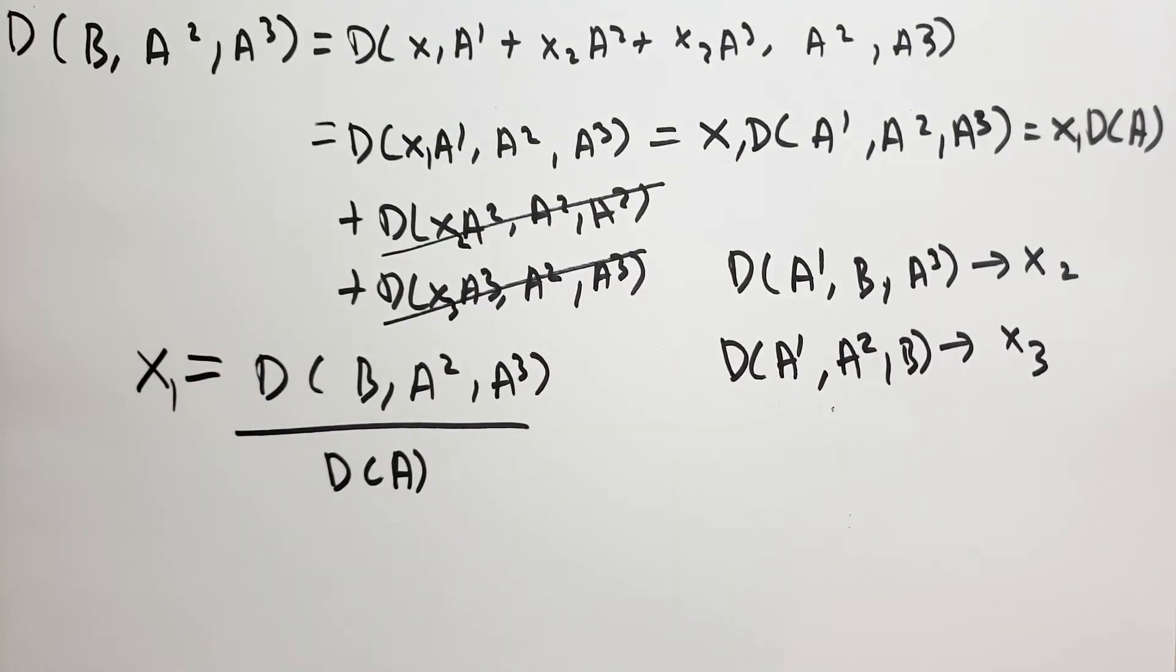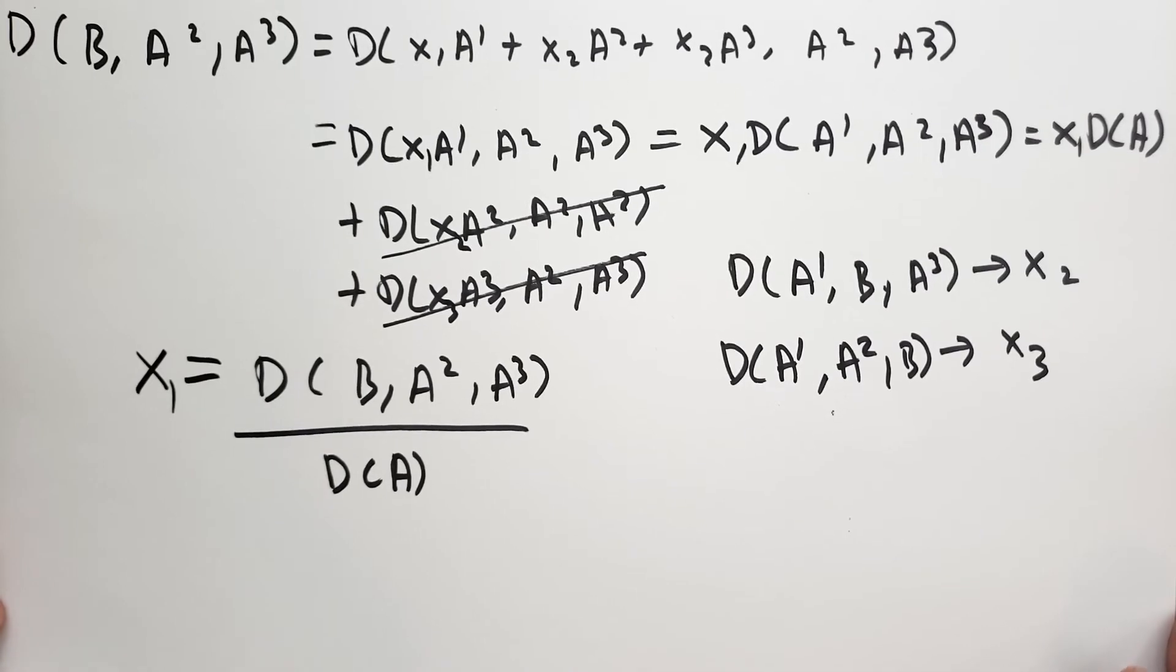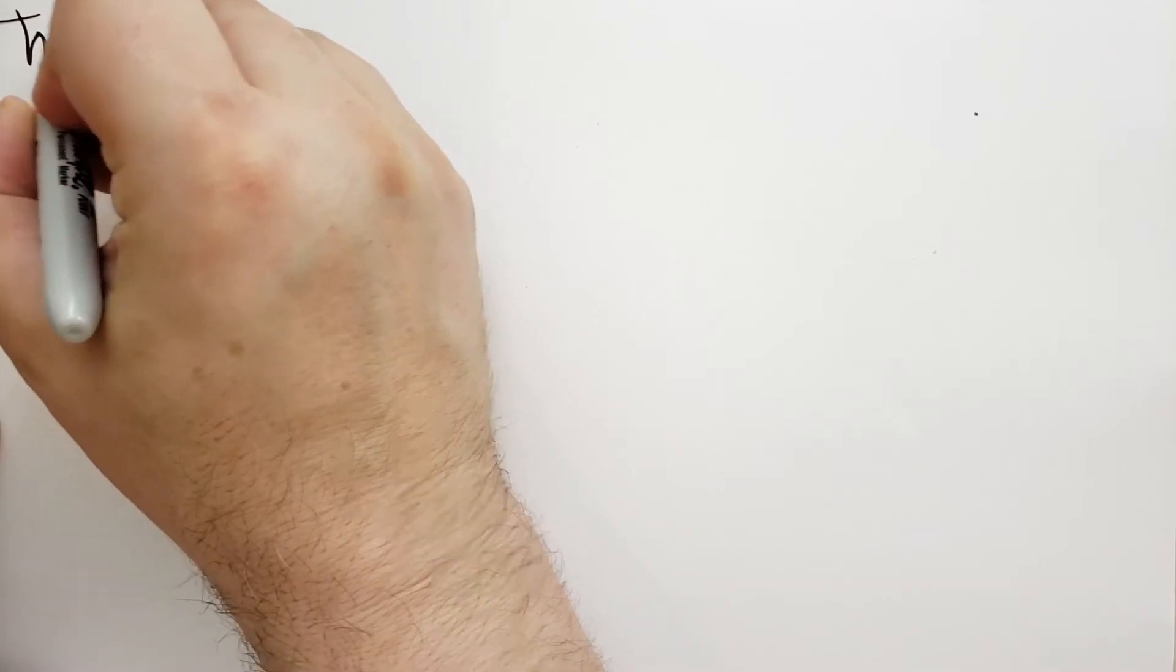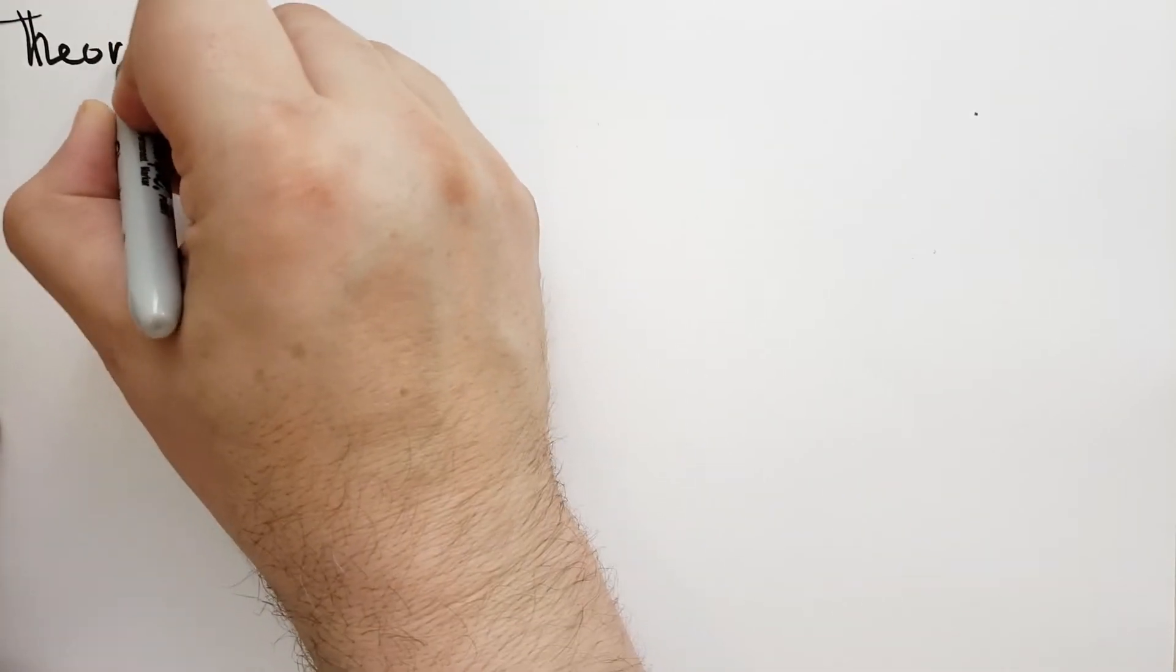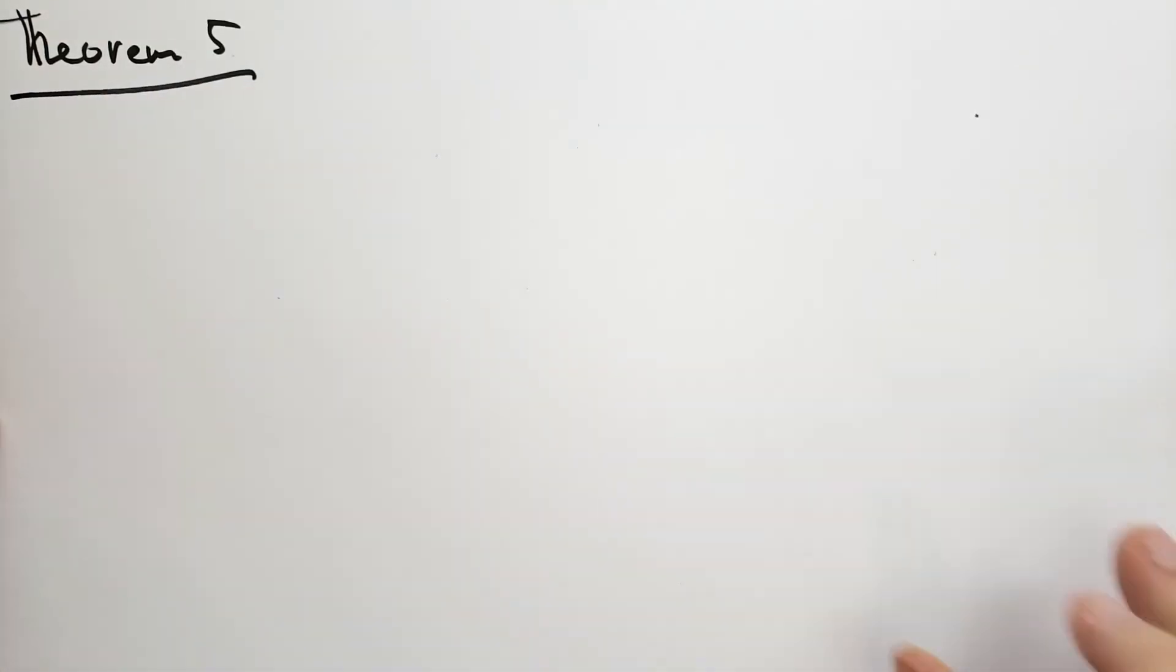Theorem 4 is known as Cramer's Rule. It's a very straightforward way to get the determinant of these linear systems of equations. Moving on, we have Theorem 5.